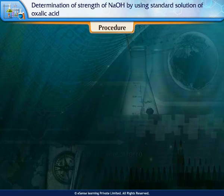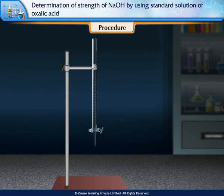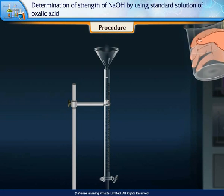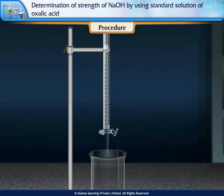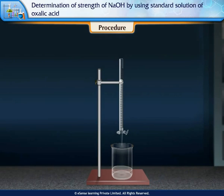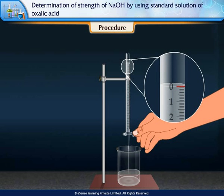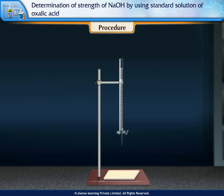Wash and clean all apparatus with water. Rinse the burette with the given sodium hydroxide solution and, using a funnel, fill the burette with sodium hydroxide solution. Remove air bubbles from the burette and adjust the lower meniscus of the solution to the 0 mark. Keep a white porcelain tile below the burette.